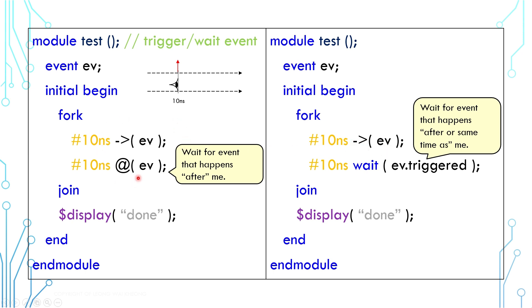Now depending on how simulator executes the multiple threads, using @ to block event may introduce random behavior as it may or may not see the event trigger that happens at the same timing. On the other hand, using wait event.triggered will give a predictable result because the wait statement can always see the trigger that happens at the same timing.